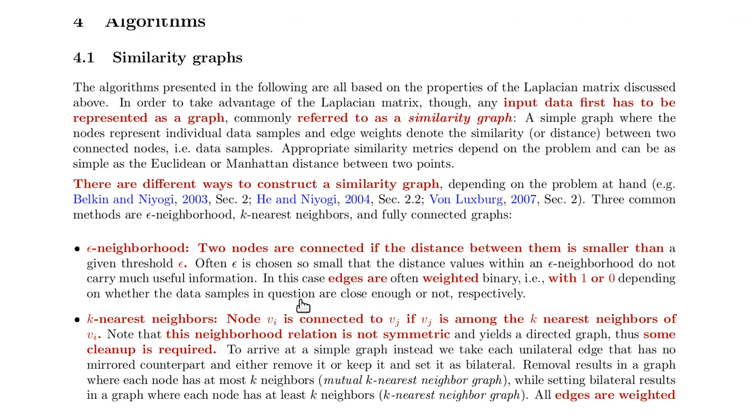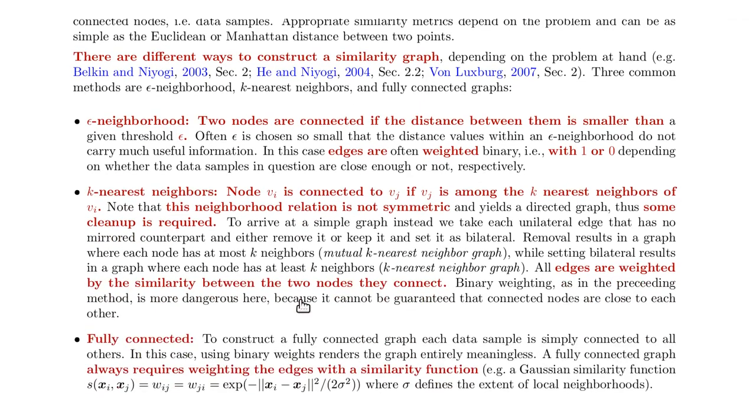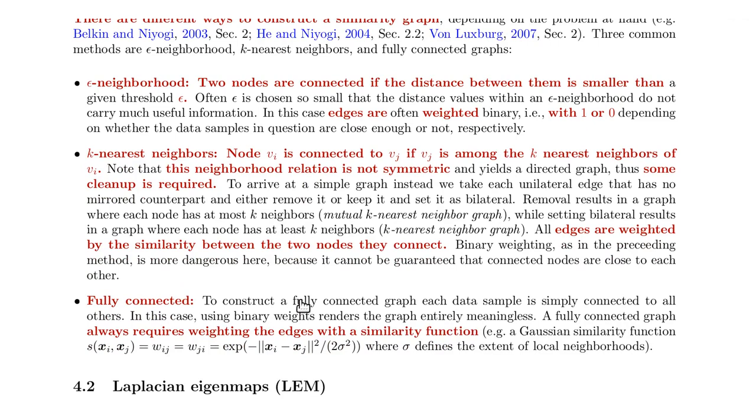The second method is k-nearest neighbors. Rather than connecting a node with all its neighbors within epsilon, each node is connected with the k-nearest neighbors. That has the advantage that you're guaranteed that each node is exactly connected to k-nearest neighbors, so you have a certain minimum size of a subgraph.